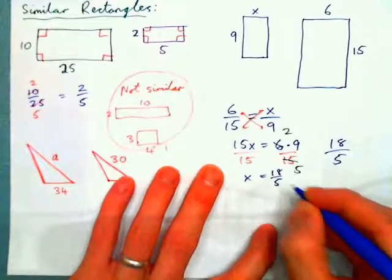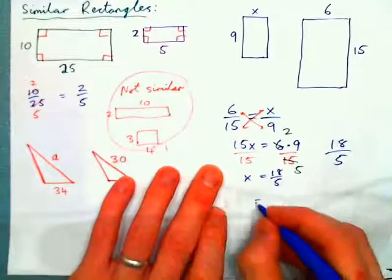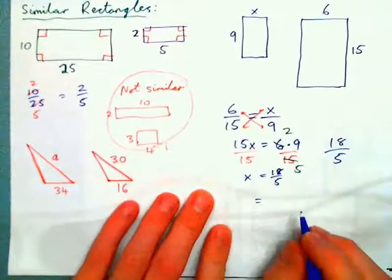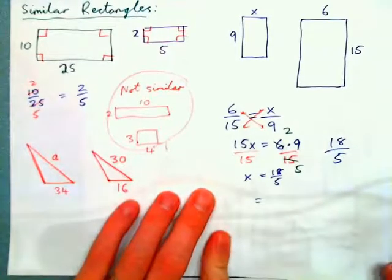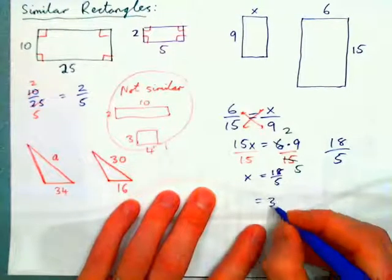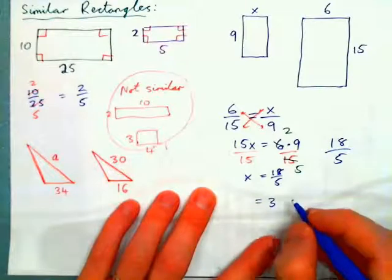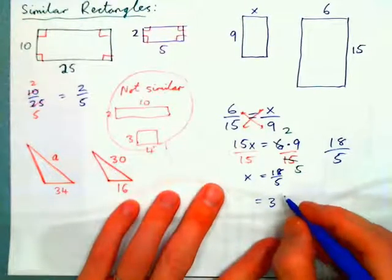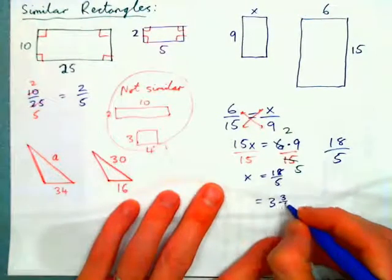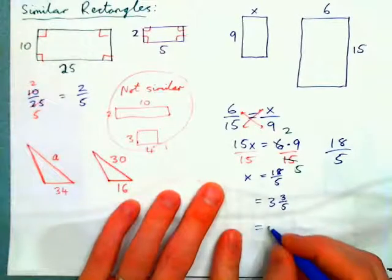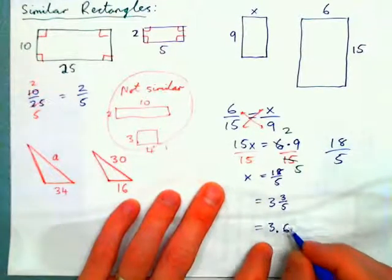Let's also give it as a mixed number and as a decimal. 5 into 18 goes 3 times with remainder 3, so 3 and 3 fifths. Or as a decimal, that would be 3.6.